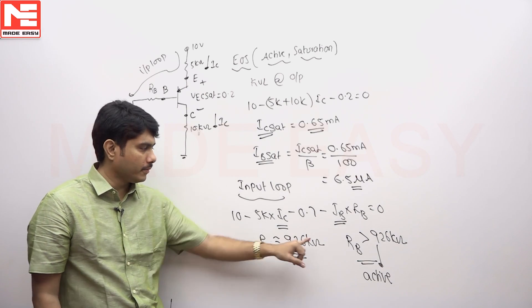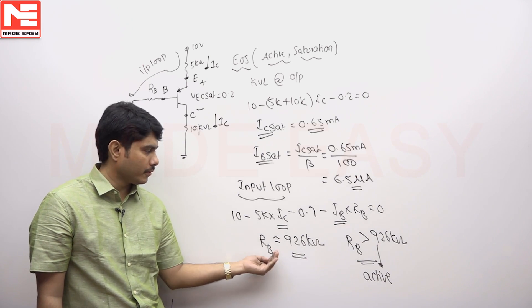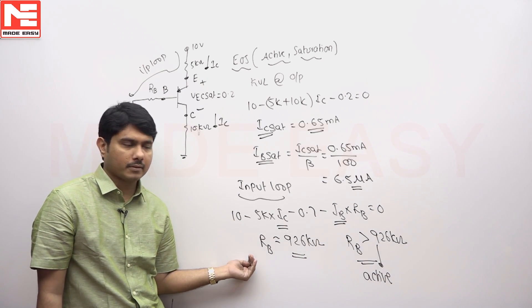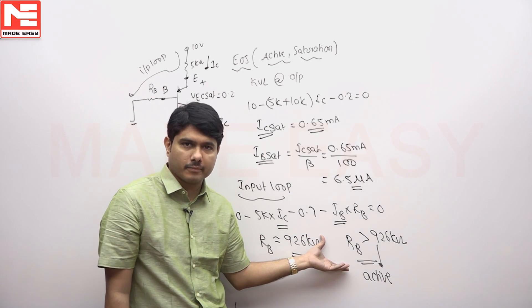RB 926 kilo ohms is boundary. Greater if you apply, base current will be less. So you will be under active region. If RB is less than 926 if you keep, you will go into the saturation. So I think better option is RB should be greater than 926 kilo ohms is better.